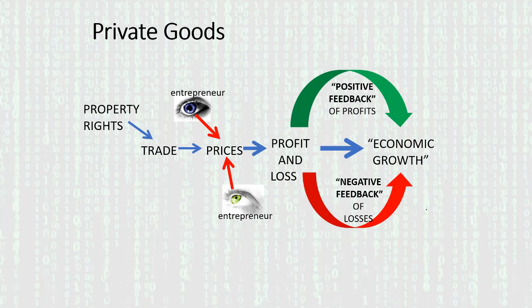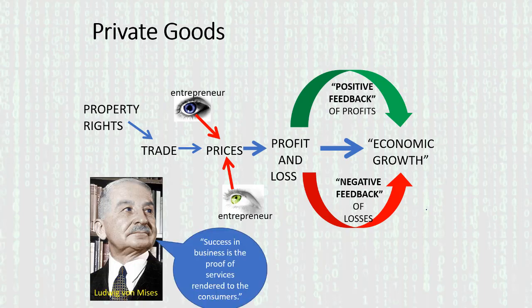It's a dynamic process that can grow, evolve, and adapt over time. As the great economist Ludwig von Mises says in summary: businesses can only succeed in this process if they render services to the consumers — if they create value for the consumers. So this process is what we in economics would call incentive compatible.